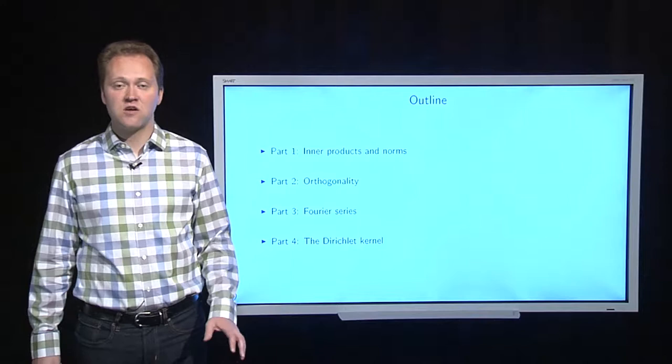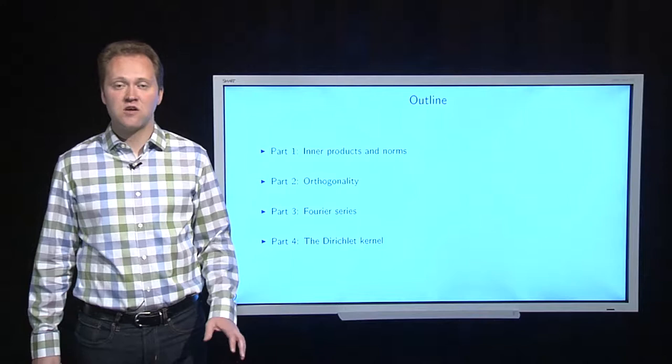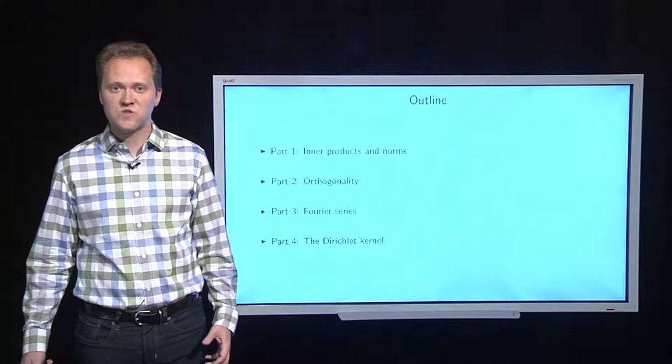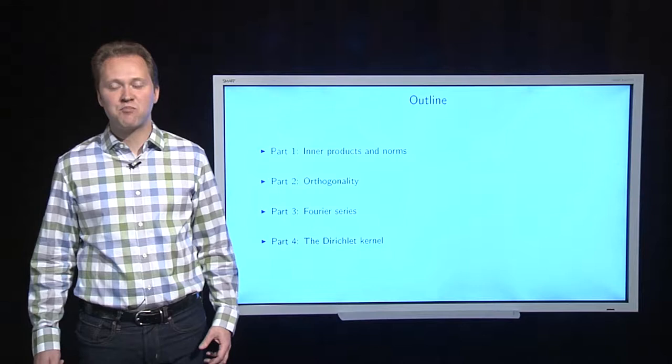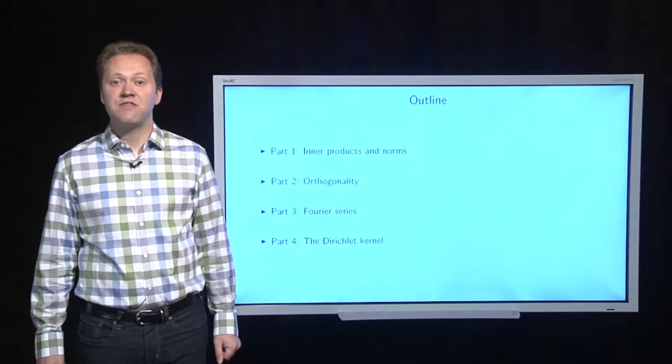In the first part of this series, we looked at inner products and norms from linear algebra. In part two, we explored orthogonality using inner products. The highlight of this series was part three, where we introduced Fourier series as best approximations. And now we've come to part four, where we're going to look at the Dirichlet kernel.